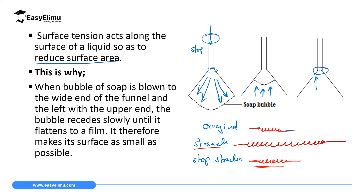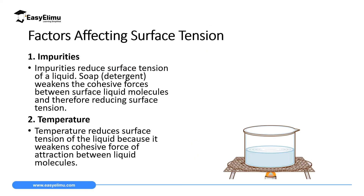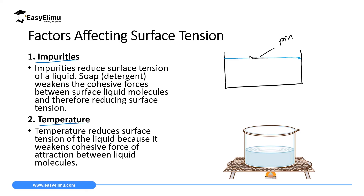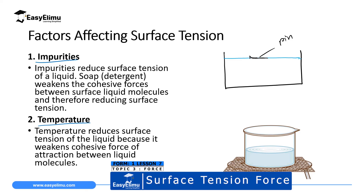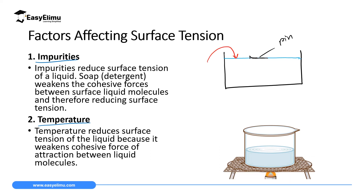There are two factors which affect surface tension: impurities and temperature. Impurities affect surface tension by breaking the cohesive force — the force of attraction between molecules of the same kind. For example, if you have a beaker of water with a pin floating on it, the whole surface is like a stretched elastic thin skin. If you introduce impurities like soap solution at one point on the surface...